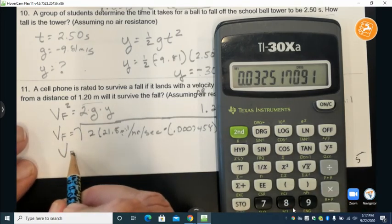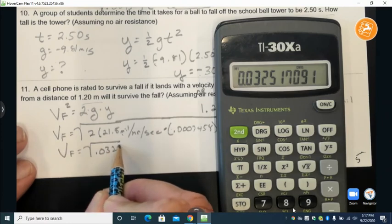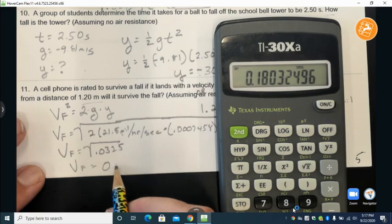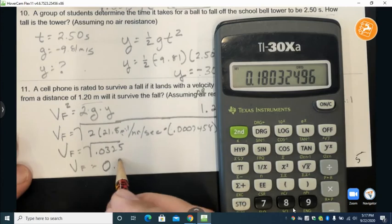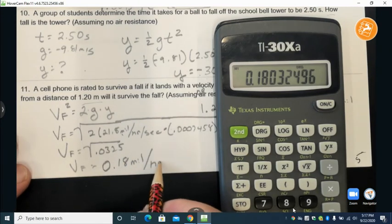And then don't forget to take the square root. So if I stop for a minute make that note. Square root of 0.0325, VF equals 0.18 miles per hour.